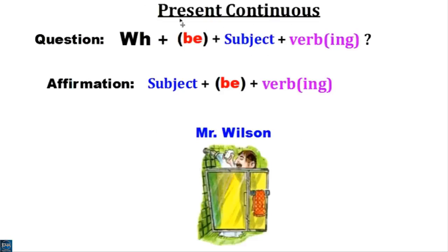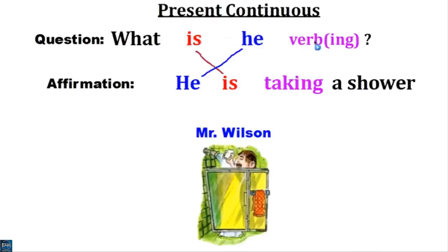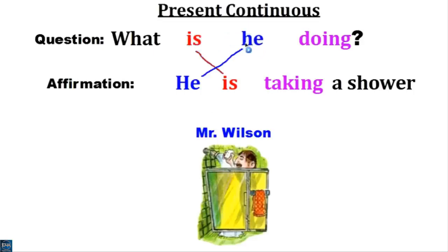Let's look at the question. Remember the affirmation: Mr. Wilson — he is taking a shower. In the question, the position of the verb 'to be' is first, and the subject is next. For example, the question: what is he doing? And the answer: he is taking a shower. Remember, the verb 'to be' is first in the question, then the subject.